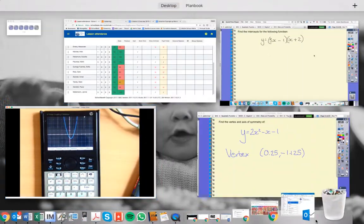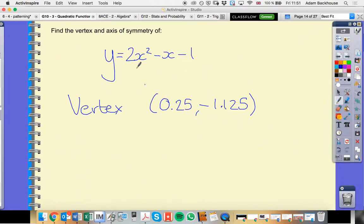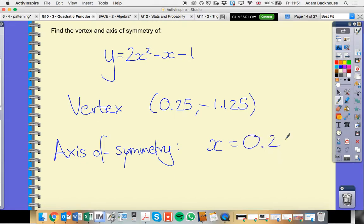Well, the line passes through the vertex. So this is the value that we're interested in. So our axis of symmetry has the equation x equals 0.25.